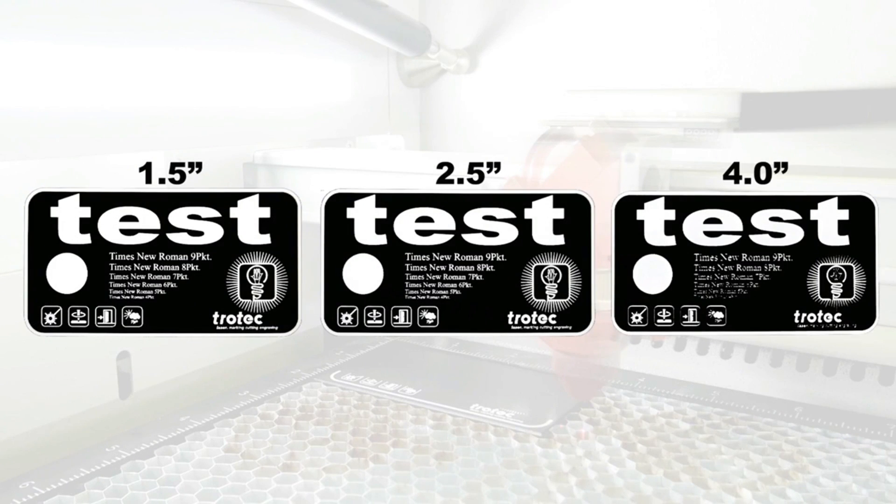The 2.5-inch lens is showing a result somewhere in the middle between the two. It looks okay, but not as good as the 1.5-inch lens results. The conclusion is that the smaller the beam's spot size, the smaller and more detailed engraving you'll get.